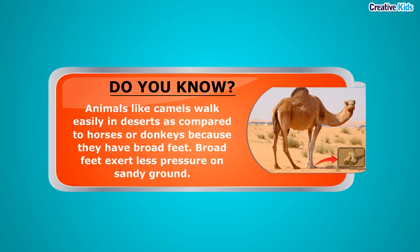Camels, called the ship of the desert, can walk easily in deserts compared to horses or donkeys. Why? Camels have broad feet. Broad feet exert less pressure on the sandy ground because pressure and area of contact are inversely proportional — more area means less pressure. Because of their broad feet, the camel exerts less pressure on the sand and does not sink into it.